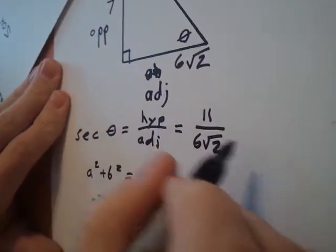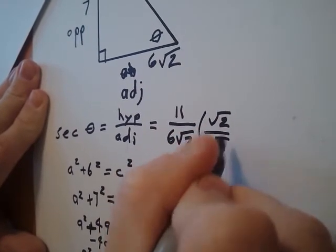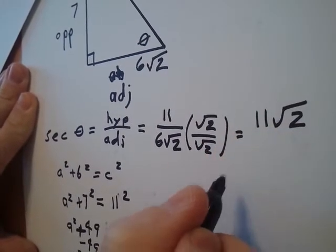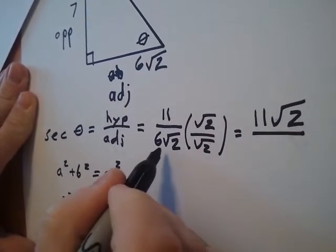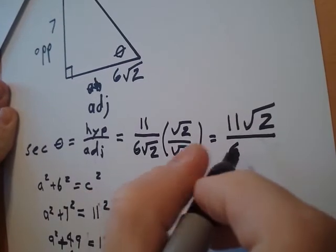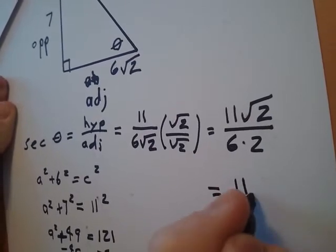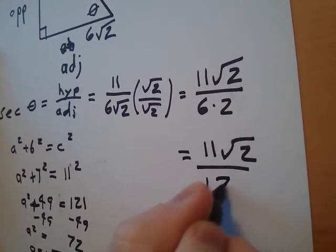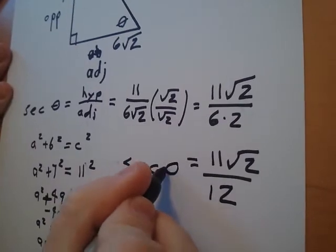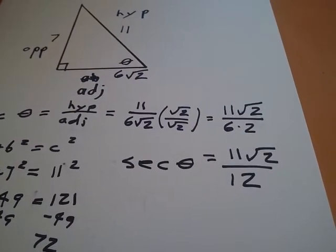We can make this guy a little bit nicer. Let's get that radical out of the bottom. Multiply by square root of 2 over square root of 2. We get 11 times the square root of 2 on the top. And on the bottom, that's 6 times the square root of 2 times square root of 2 is just going to be 6 times 2. So this is going to be 11 times the square root of 2 over 6 times 2, which is 12. And we are done. The secant of theta is going to equal 11 times the square root of 2 over 12. That's it.